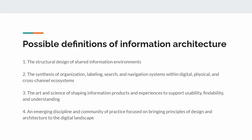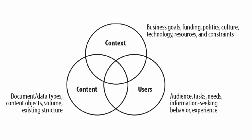Let's focus in on a few definitions of what information architecture could be. The Polar Bear book lists four possible definitions: the structural design of shared information environments; the synthesis of organization, labeling, search and navigation systems within digital, physical and cross-channel ecosystems; the art and science of shaping information products and experiences to support usability, findability and understanding; and an emerging discipline and community of practice focused on bringing principles of design and architecture to digital spaces. To frame these definitions, let's introduce three central considerations of information architecture: users, content, and context.